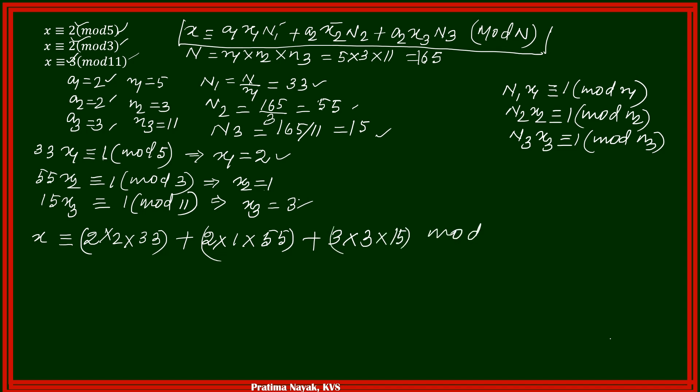Modulo capital N. Capital N means product of n1, small n1, n2, n3. It will be, we have to multiply 5, 3, 11. It is 165. So add it. X is congruent to. First is 132 plus 110 plus 135 modulo 165.